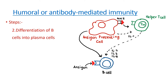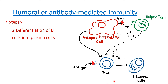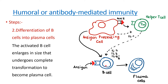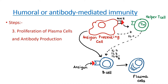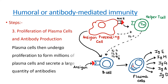Step 2 is differentiation of B cells into plasma cells. On activation by antigen, the B cell enlarges in size and undergoes complete transformation to form plasma cells. Step 3 is proliferation and antibody production: plasma cells undergo proliferation to form millions of plasma cells, which secrete large quantities of antibodies — IgE, IgM, IgG, IgA, and IgD — that act against the antigen.